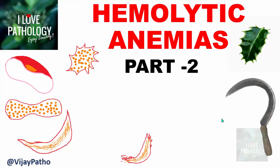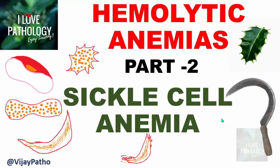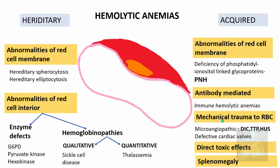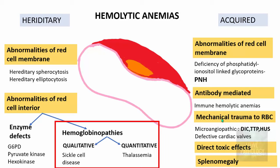Hello everyone, welcome to this short tutorial from Pathology Made Simple at iloepathology.com. This is part 2 of the hemolytic anemia series. In this part I will be discussing about sickle cell anemia. In the next 15 to 20 minutes we will talk about what hemoglobinopathies means, sickle cell anemia in detail, the etiopathogenesis, clinical features, various crises, laboratory findings, treatment and prognosis. In part 1 we discussed the classification, and here we will concentrate on hemoglobinopathies.